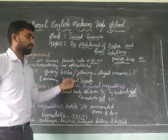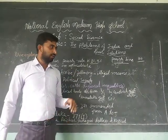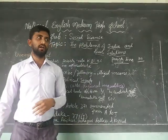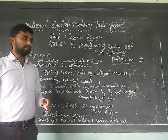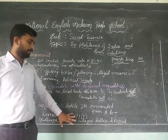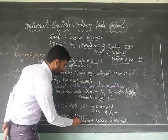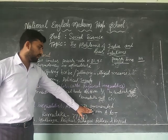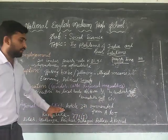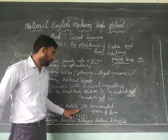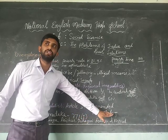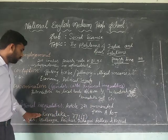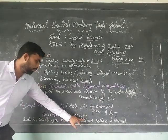Regional inequality is becoming the biggest problem for India because some regions are asking for separate statehood. For example, Telangana came out of Andhra Pradesh, and in Karnataka some regions have also demanded separate states. So the Karnataka government gave them special status under Article 371J of the Constitution. Article 371, amended from A to J, is reserved for addressing regional inequalities.